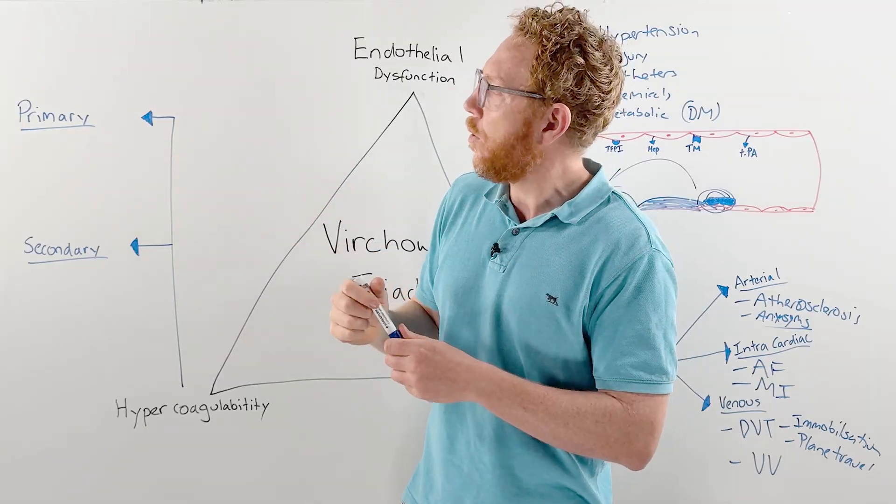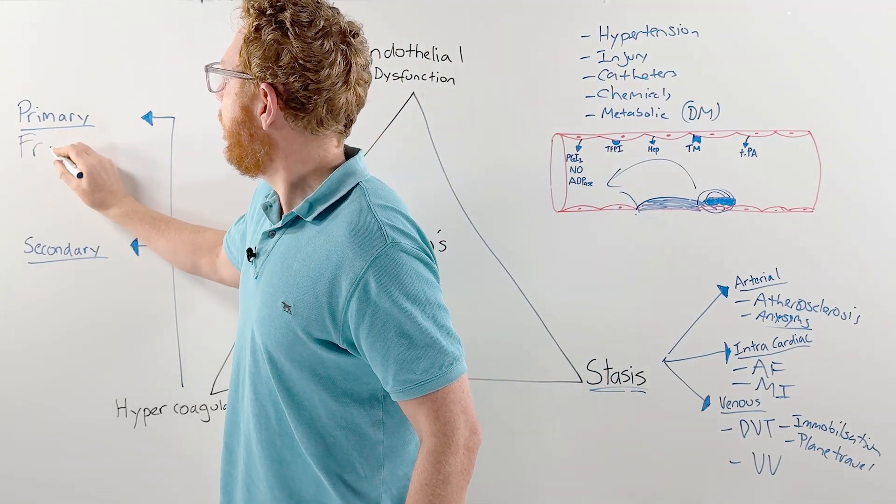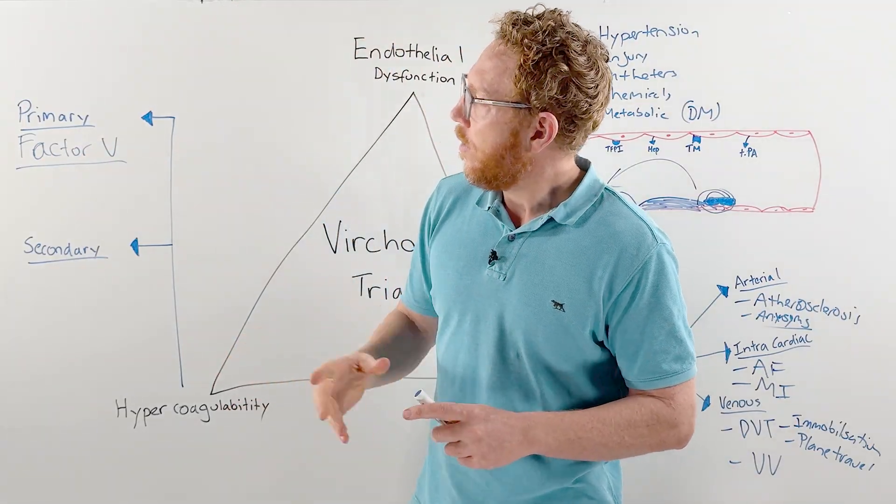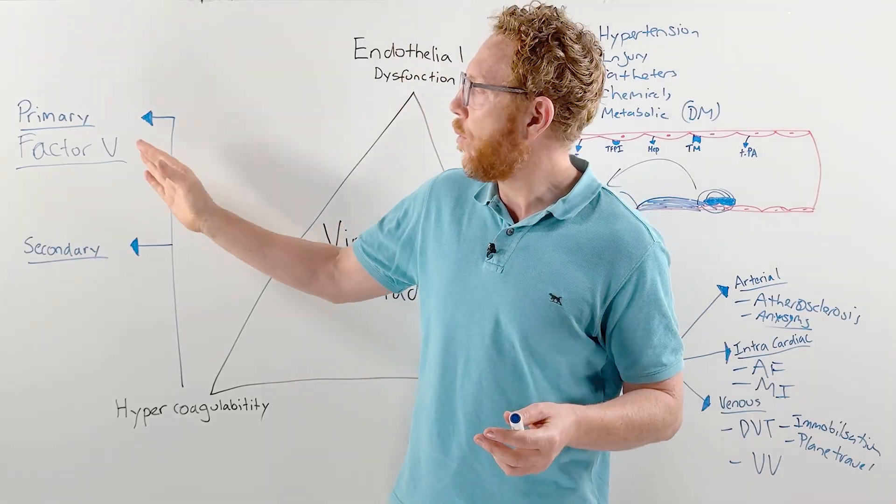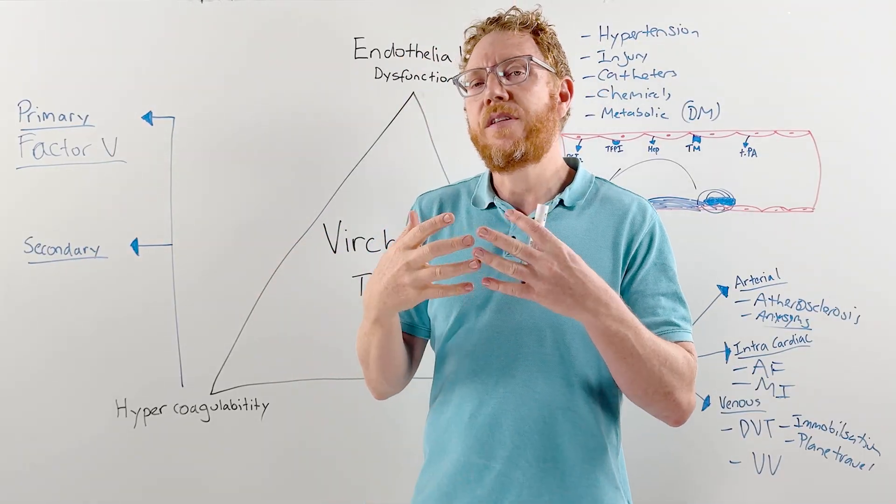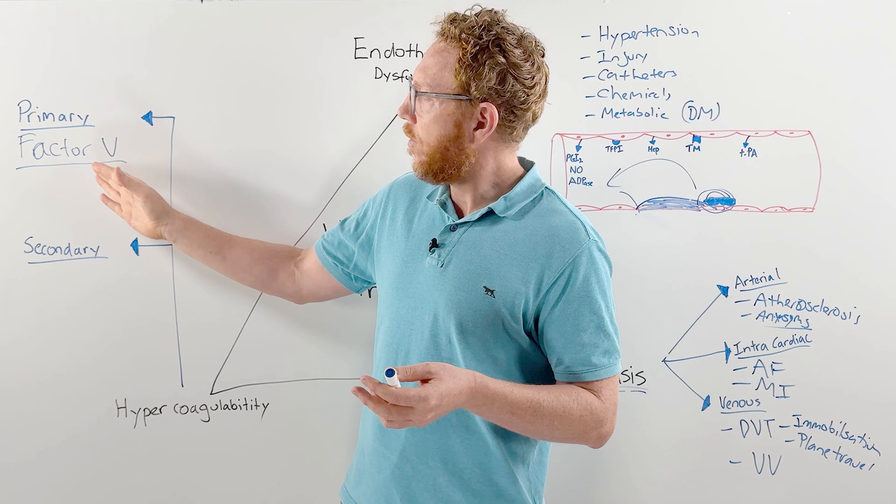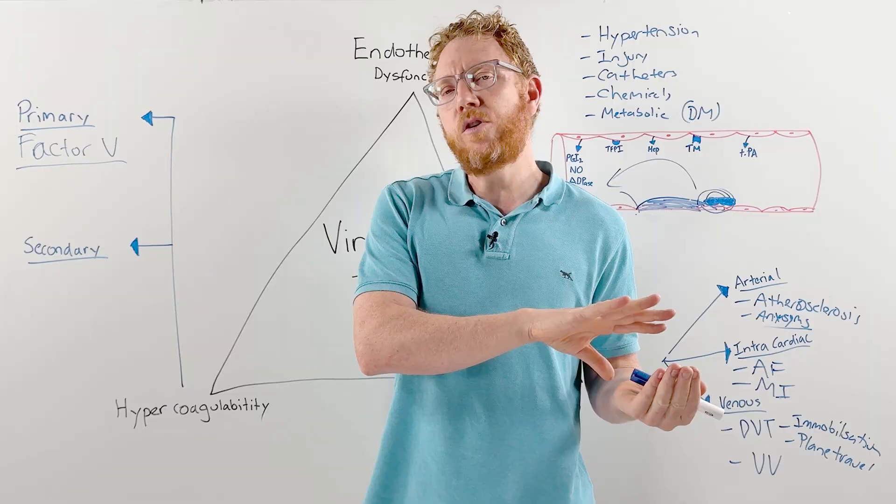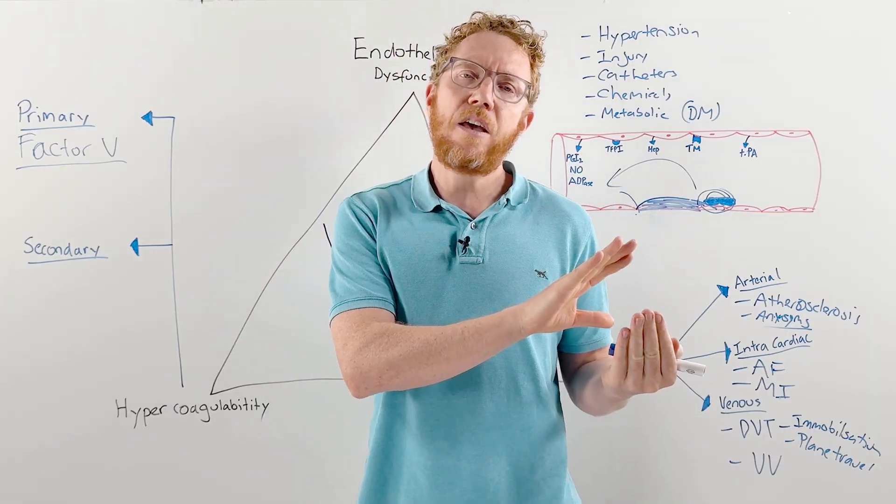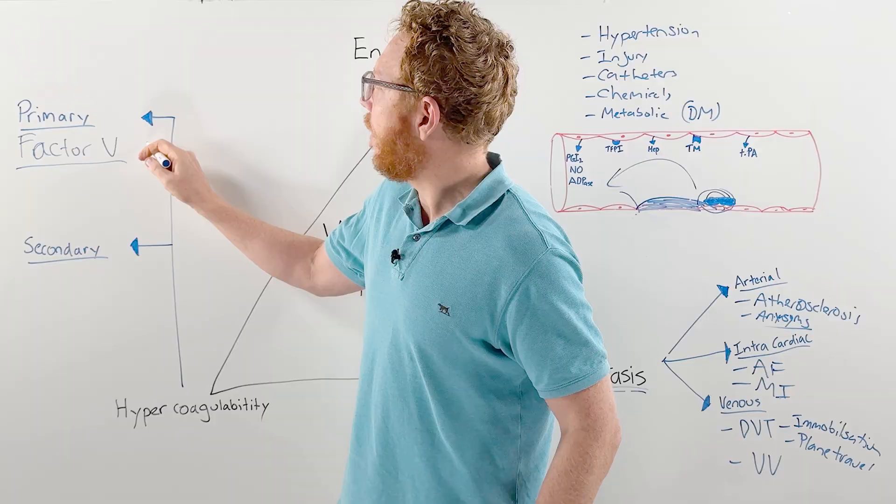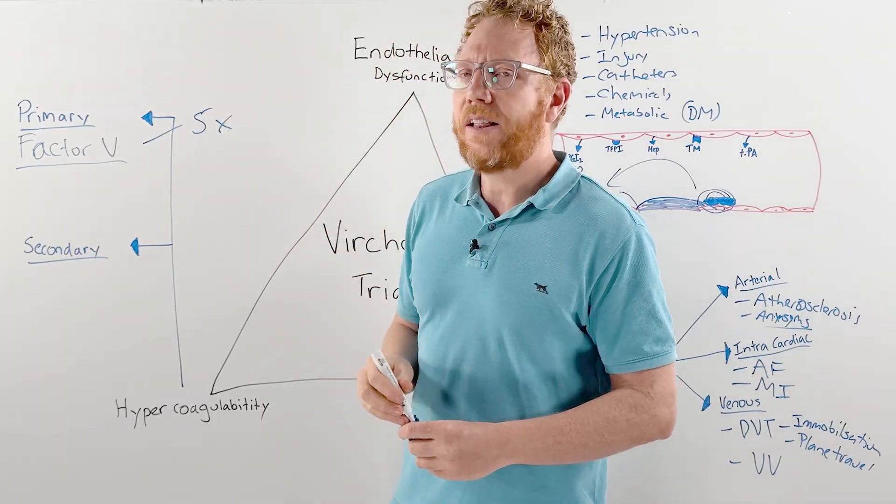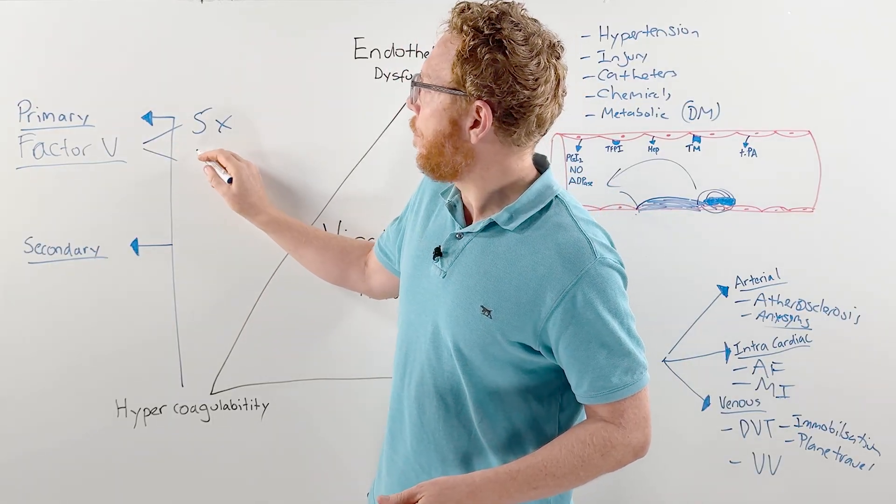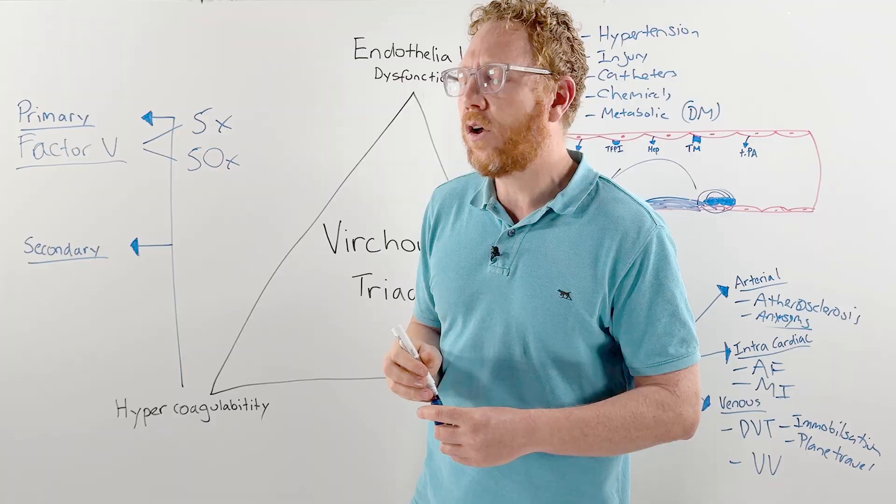One of the most common primary disorders is factor V or Leiden's factor disorder. Factor V is made in the liver and is one of the clotting proteins, part of the central pathway. With this disorder, it could be homozygous or heterozygous—either one single gene mutation or both gene mutation. In heterozygous (one gene mutation), they have a five-fold increased likelihood of clot formation. Whereas if homozygous (both genes), it's a 50-fold increase in clot formation.